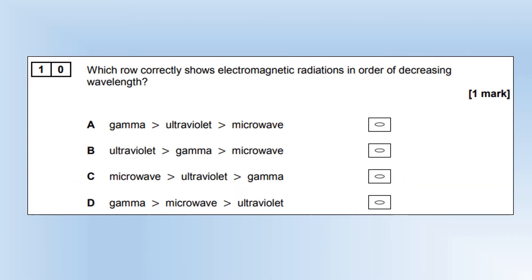Which row correctly shows the electromagnetic radiations in order of decreasing wavelength? The largest wavelength is the radio-microwave end of the spectrum, so that's going to give us option C going into decreasing wavelength.